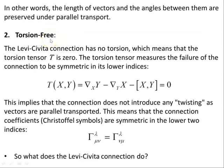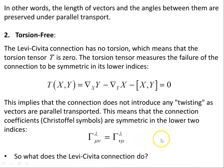The other condition is torsion-free. The Levi-Civita connection has no torsion, meaning the torsion tensor is zero. The torsion tensor measures whether the connection is symmetric in its lower indices. This implies the connection does not produce any twisting as vectors are parallel transported. This means the Christoffel symbols are symmetric in the lower two indices: Γ^λ_μν = Γ^λ_νμ.